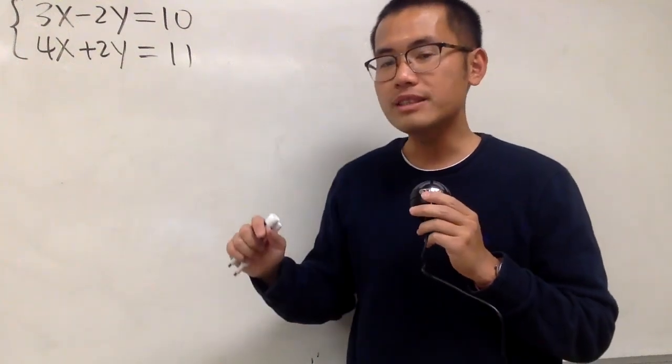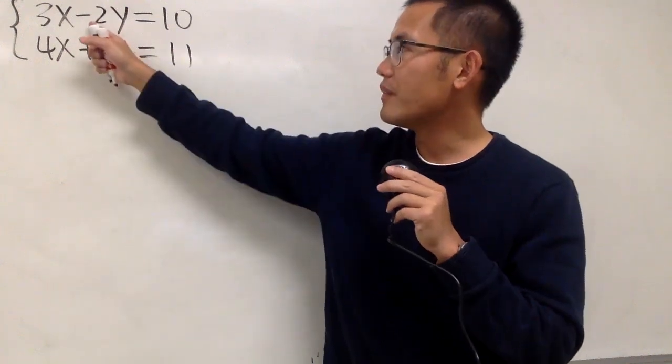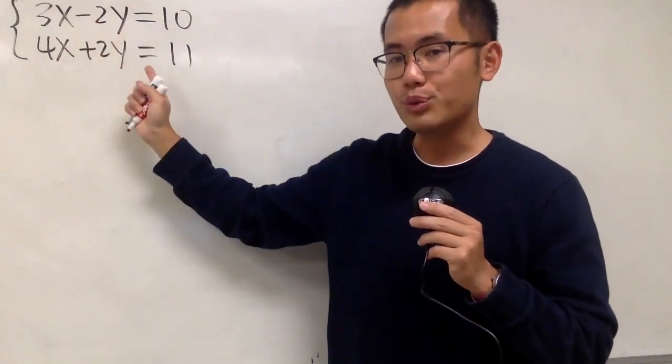Okay, we are going to solve this system of equations, and this right here is actually very convenient for us, because here we have negative 2y, and this right here is positive 2y.